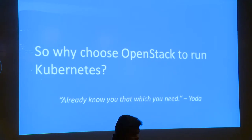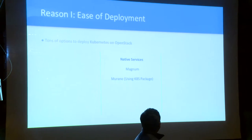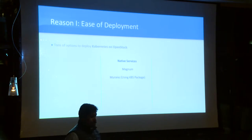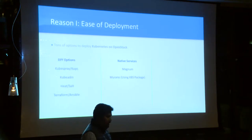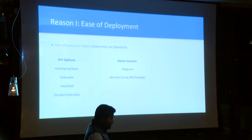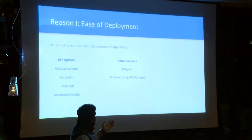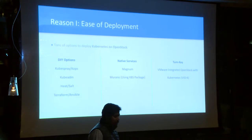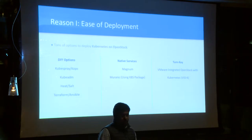I'll give you three reasons. Reason number one: the ease of deployment. There are tons of options available out there to deploy Kubernetes on OpenStack. You could choose native services like Magnum or Murano, build your own custom solution, or use the recently released VMware Integrated OpenStack with Kubernetes for an enterprise-ready turnkey solution.